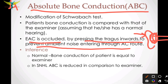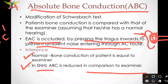The inference of this Absolute Bone Conduction test is that it is normal when the bone conduction of the patient is equal to that of the examiner. In sensorineural hearing loss, the absolute bone conduction is reduced in comparison to the examiner.